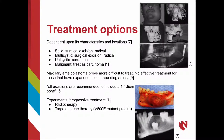Treatment options depend upon the characteristics and location of the lesion. For solid and multicystic types, surgical excision or radical therapy is preferred. For unicystic, curettage is an option. Malignancies are treated as carcinomas. Maxillary ameloblastomas are more difficult to treat, with no effective treatment for those expanded into surrounding areas. All excisions are recommended to include a 1 to 1.5 cm bone margin. Experimental treatments include radiotherapy or targeted gene therapy.